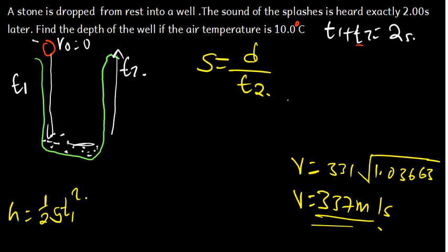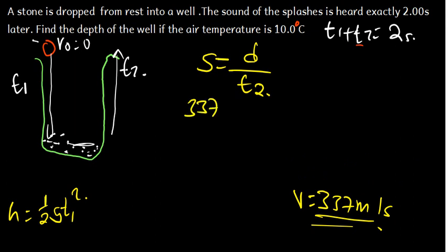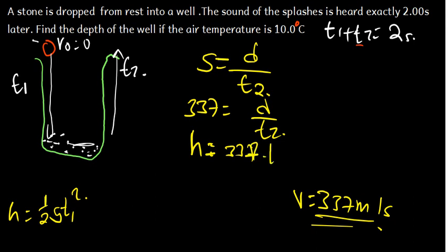We put 337 into our speed equation: 337 equals H divided by T2, so H equals 337 times T2. Let's call this Equation 2.